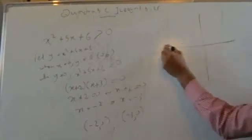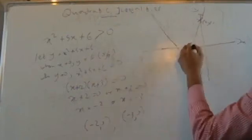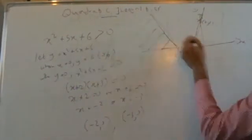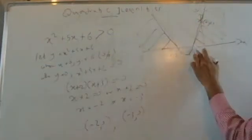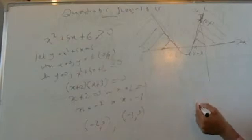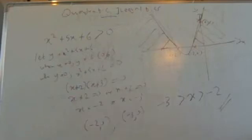So let's do a small sketch on the side. Mark (−2, 0) here, (−3, 0) here, and (0, 6) up here. The graph goes like a U-shape. Now they want to know when this is greater than 0 — it's greater than 0 up here and up here, so it's this section and this section. That means x has to be greater than minus 2, or x has to be less than minus 3. And that's your solution — that's how we solve a quadratic inequality.